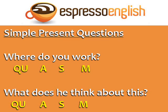Simple present questions. Where do you work? Here, 'where' is the question word, 'do' is the auxiliary verb, 'you' is the subject, and 'work' is the main verb. Another example: what does he think about this? In this case, the auxiliary verb is 'does' because the subject is 'he'.